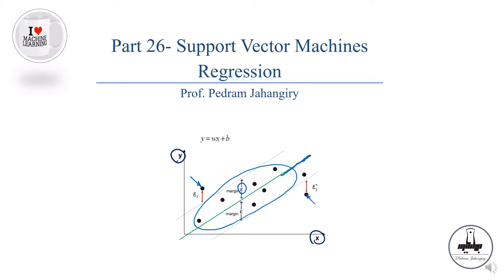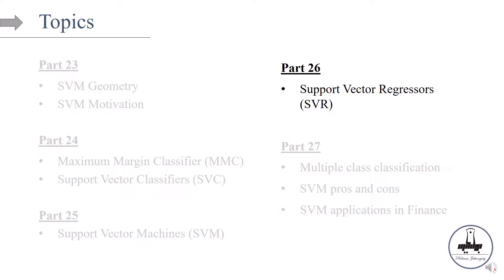If I have this hyperplane and I want to make a prediction for, let's say, this observation in a test set, the model is going to say: with this value of X, the predicted value for Y is going to be this number. So in this episode, part 26, we are going to see what is happening behind the scene when you're using support vector machines as regressors.